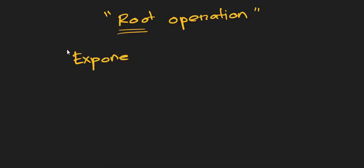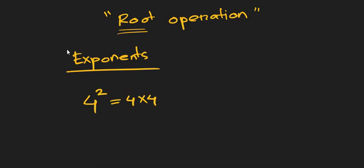In our last video we talked about basic exponents. We learned that 4 to the power 2 is basically 4 times 4, which is 16. And 4 cubed is actually 4 times 4 times 4, which is 64.